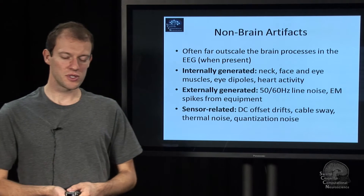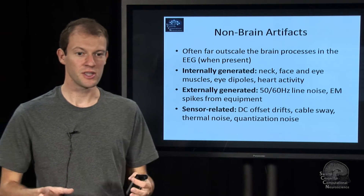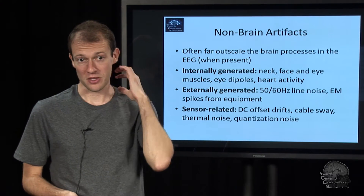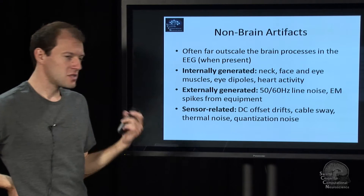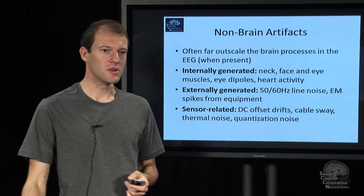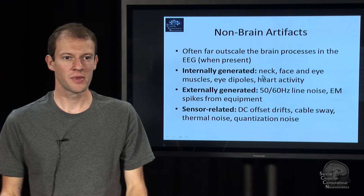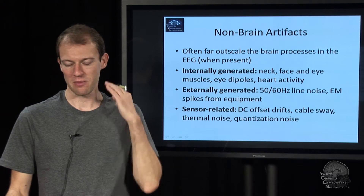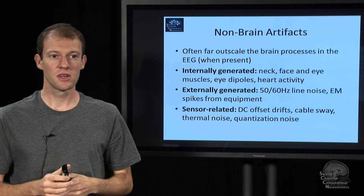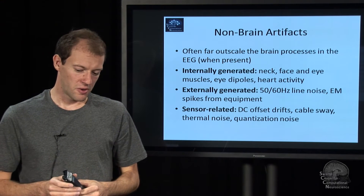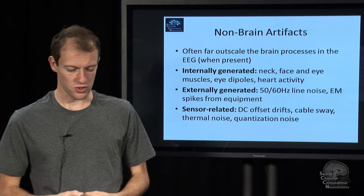First and foremost, these artifacts usually are larger in amplitude than the actual EEG activity, because they're generated by powerful muscles as opposed to tiny neurons. We distinguish between different classes: internally generated artifacts come from muscles — neck muscles are really the dominant ones — but also face muscles like blinks and so on. There's other things like heart activity, which is an artifact source but not as strong.